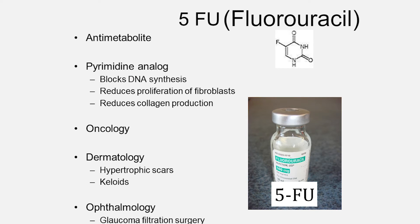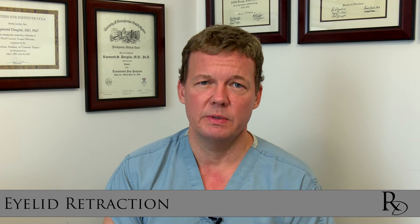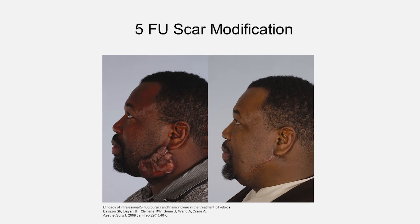5-fluorouracil, or 5-FU, is an anti-metabolite. It doesn't last long, and we use it in very small doses. It binds into the DNA and prevents cells from proliferating or dividing, especially the scarring cells. It also prevents the formation of collagen. 5-FU has been used to treat keloids for many years, and more recently we discovered in the laboratory that it inhibits hyaluronan and the production of all the matrix materials required for scar formation.